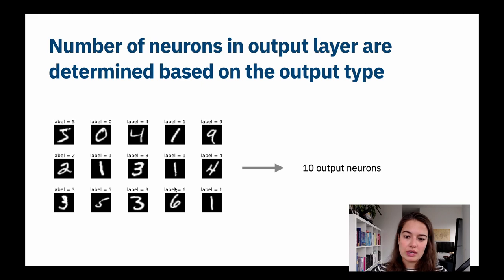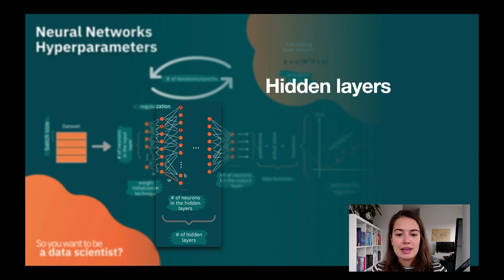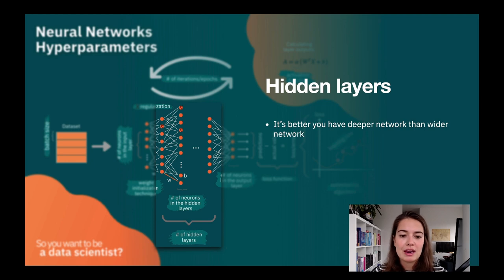Next, let's look at hidden layers. How do we decide how many layers to have, and in all these layers, how many neurons? One rule of thumb is that it's better to have a deeper network than a wider network. It's better to have more layers than more neurons in each layer.